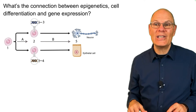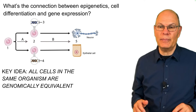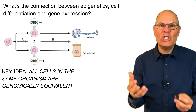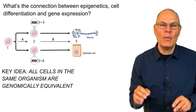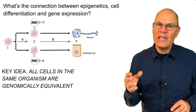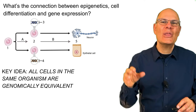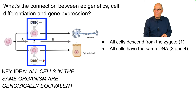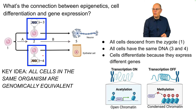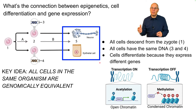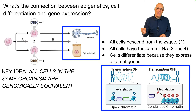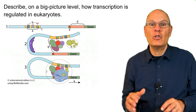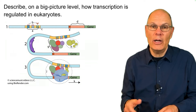What's the connection between epigenetics, cell differentiation, and gene expression? The key idea — one that needs to be memorized — is that all cells in the same organism are homogenomically equivalent. Every cell in your body, except for your gametes, has the same DNA. All cells are descended from the zygote, shown at number one in this diagram. Cells differentiate because they express different genes, and that relates to the epigenetic modifications we just discussed.